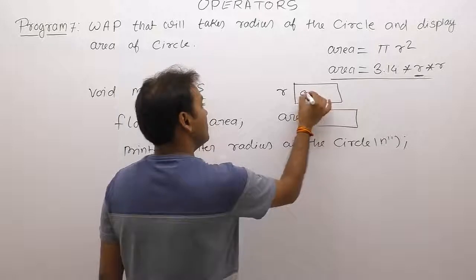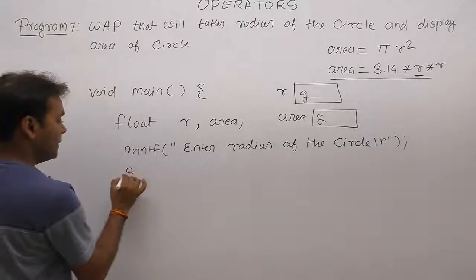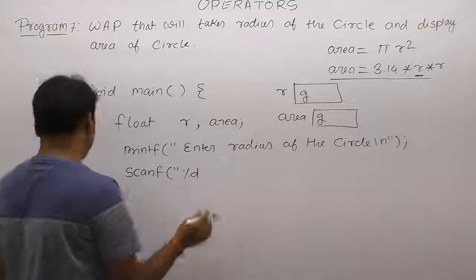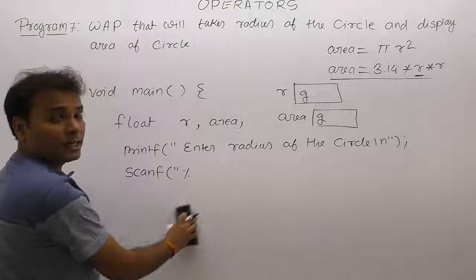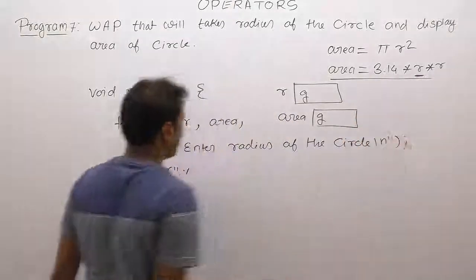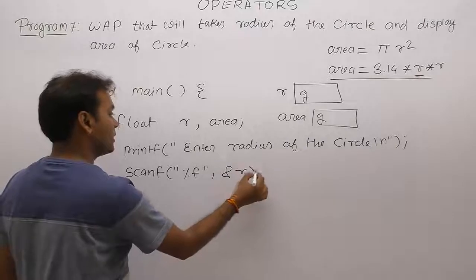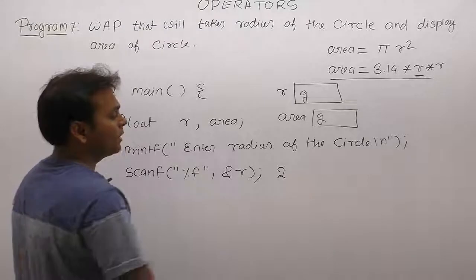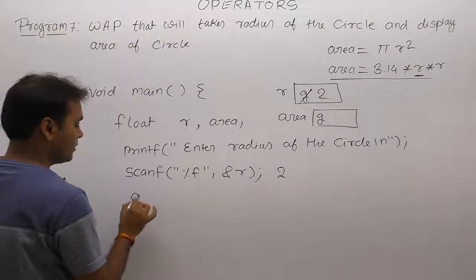Area initial value of radius and area is garbage. Then scanf - whenever this scanf function will be executed, scanf takes input. Currently for radius, formula requires input for radius value. Therefore percent f, address of r. Suppose that we are entering something like 2, then now 2 is stored inside radius.